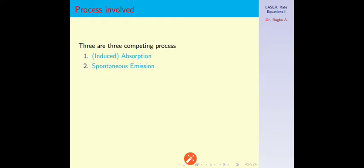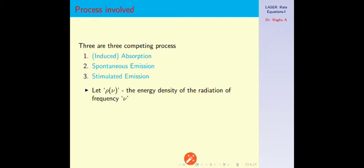Now let us consider the rate equations in the two-level system. In this case, three competing processes are possible, all familiar: first, induced absorption; second, spontaneous emission; third, stimulated emission. Absorption and stimulated emission require the presence of an external radiation field, whereas spontaneous emission requires the atoms to be in the excited state. Let ρ(ν) be the energy density of radiation of frequency ν, and g(ν) be the line shape function of radiation — it can be Lorentzian or Gaussian in shape. The product ρ(ν)·g(ν) determines the quality of the radiation field applied on the lasing system.